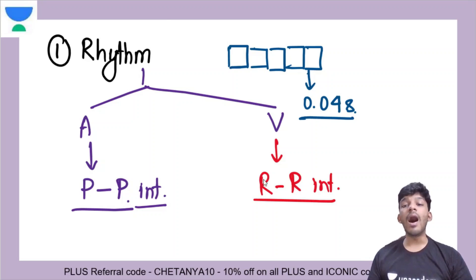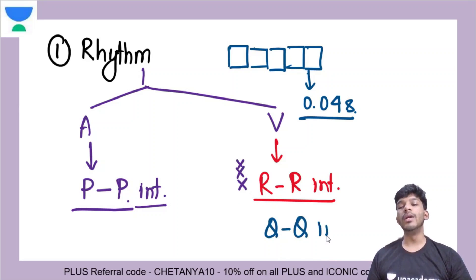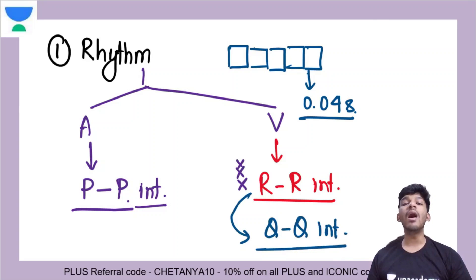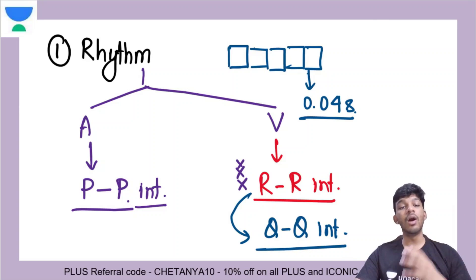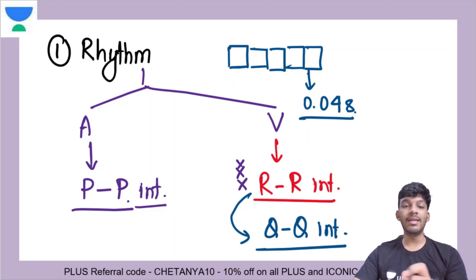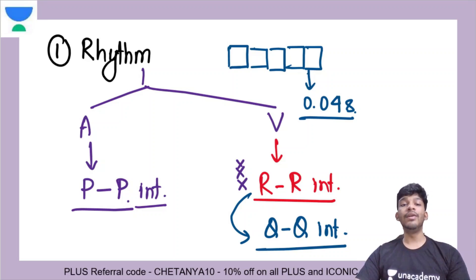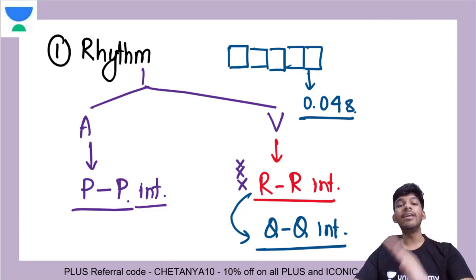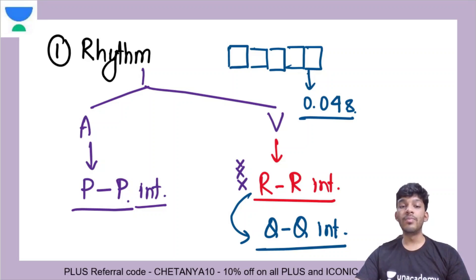What if the R wave is not visible? In that case, you will go for a QQ interval. Make sure that the intervals are at regular distances. You can see the regularity — is there some significant irregularity, and is there a pattern to that irregularity? There are two kinds of irregularities: regularly irregular and irregularly irregular.